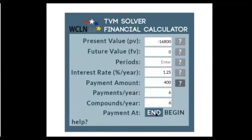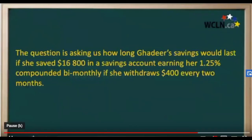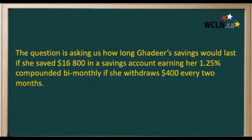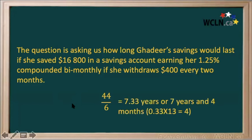Our payment at end is the default, so our number of periods works out to 44. The question asks us to calculate this in years and months, so we need to convert our 44 periods. We take 44 divided by six because there are only six compounding periods since we're compounding bimonthly. So 44 divided by six equals approximately 7.33 years, or seven years and four months.